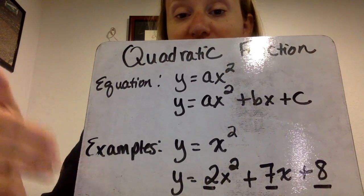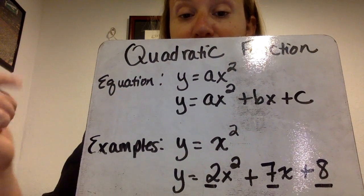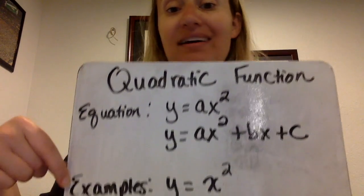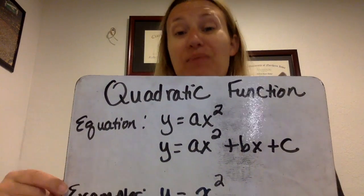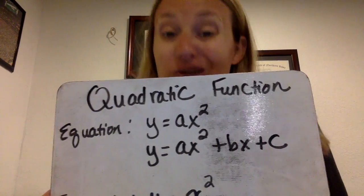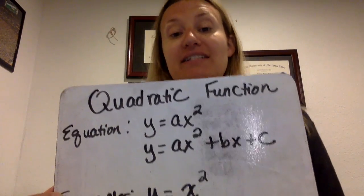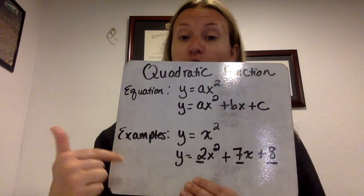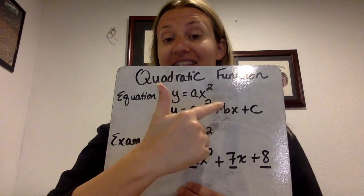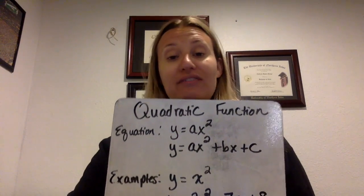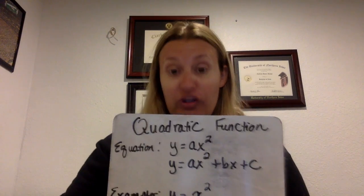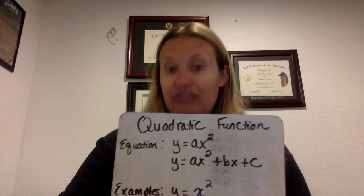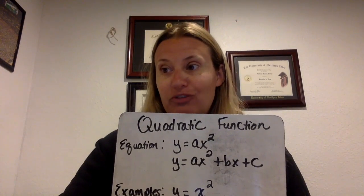Those are just the numbers that are a, b, and c. In the first example of y equals x squared, a is 1, and there is no b or c — those terms aren't there, which can definitely happen. So that's just a generic look at what the equations are going to look like. It is a second degree, which means we will never see an exponent bigger than 2, and we will always have an exponent of 2.